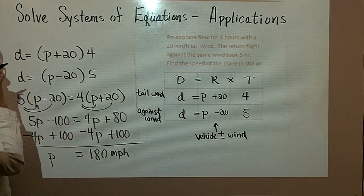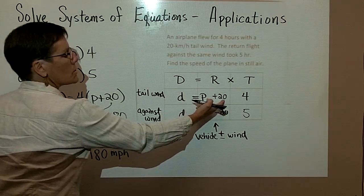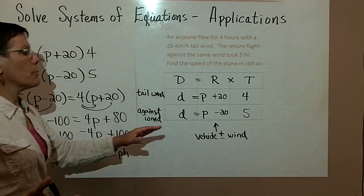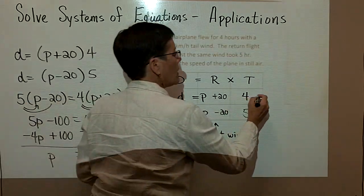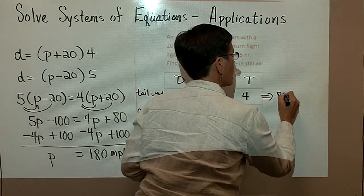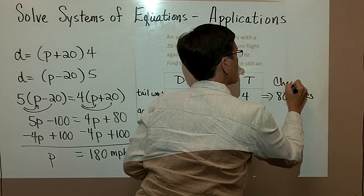You really should go ahead and check this problem. You should take that 180 plus the 20, which gives you a rate of 200 times 4, which tells us that they traveled 800 miles. So I'm just going to put here that this is part of my check.